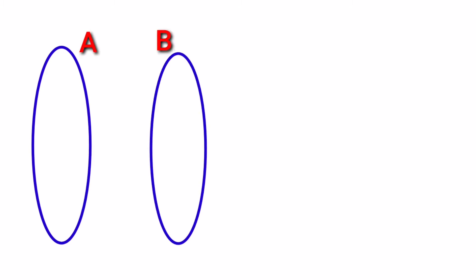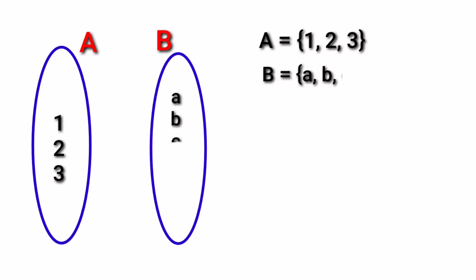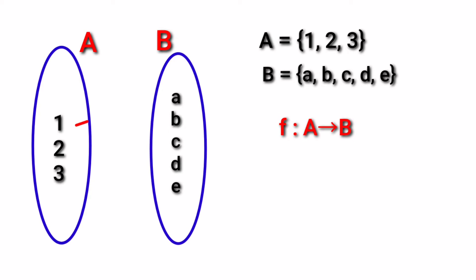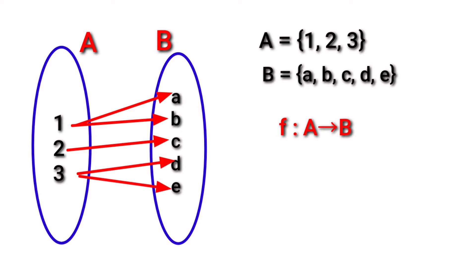Let us take two sets A and B. The elements 1, 2, 3 are in A, and the elements A, B, C, D, E are in set B. Let us check whether F from A to B is a function or not. In one relation: 1 to A, 1 to B, 2 to C, 3 to D, and 3 to E are given. The elements 1 and 3 have two images in B, so we can't say that it is a function.